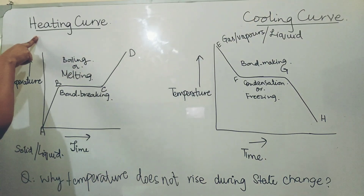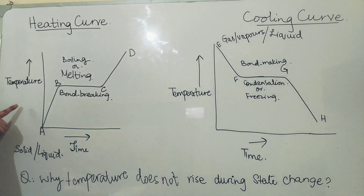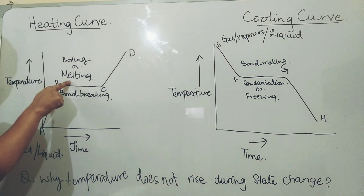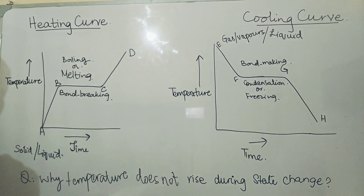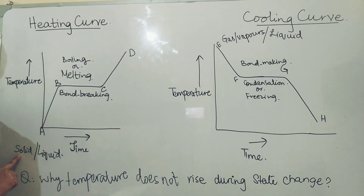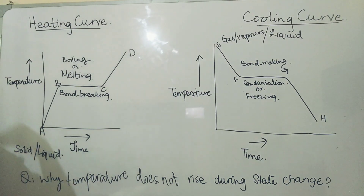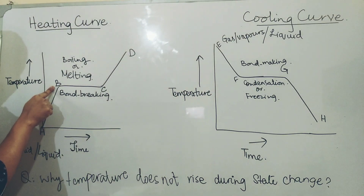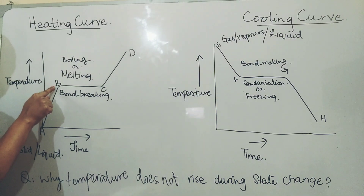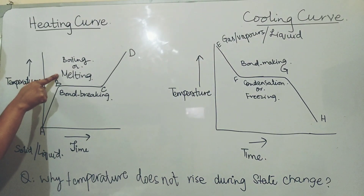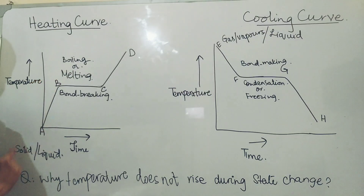Starting from the explanation of the heating curve, we will discuss how the temperature changes as the solid is heated to its melting point. As we can see from the graph, going from A to B, if we are heating a solid or a liquid, the temperature will increase and it will become maximum. At B, the kinetic energy of the substance is maximum and the substance will start changing into a liquid if it is a solid, and it will start boiling if it is a liquid.